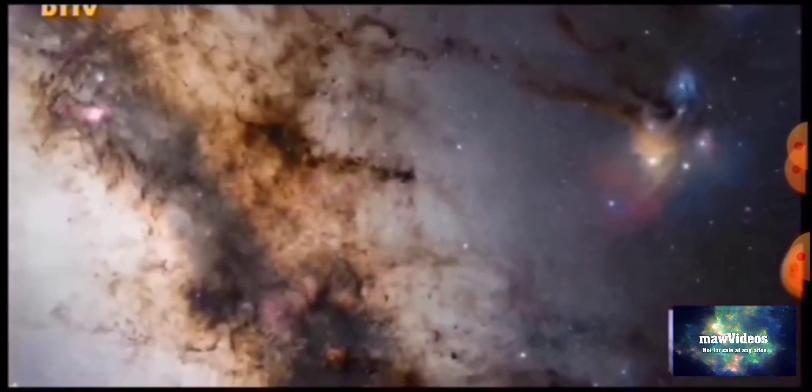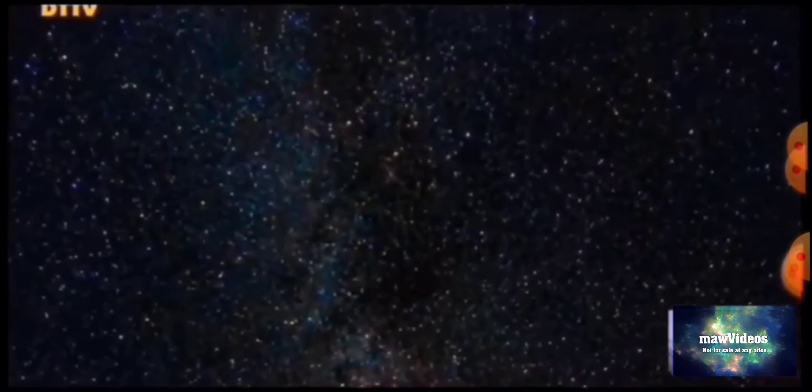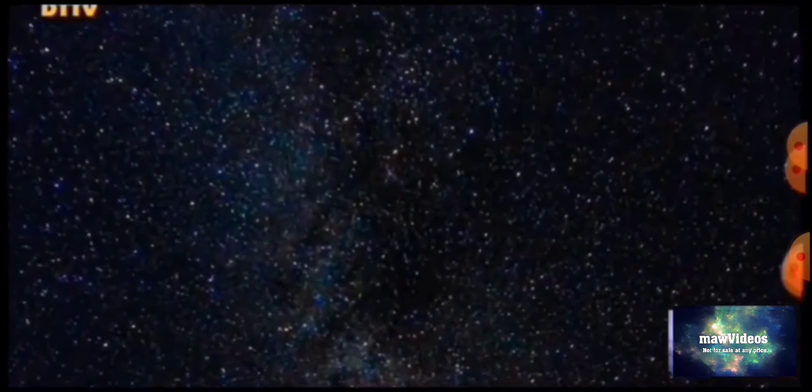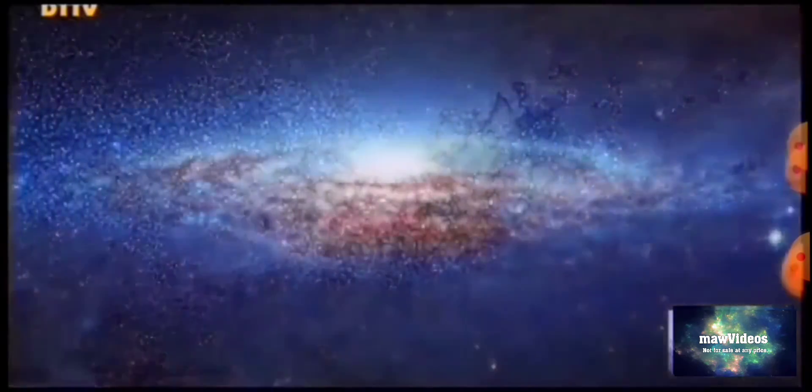The sun and you and me and all the stars that we can see are moving at a million miles a day, in an outer spiral arm at 40,000 miles an hour of the galaxy we call the Milky Way.